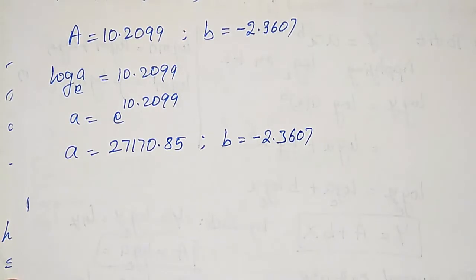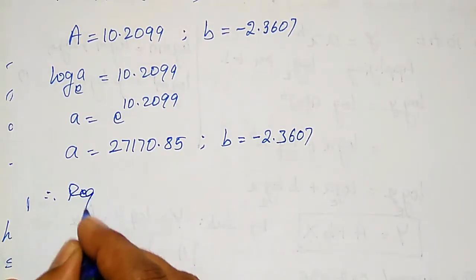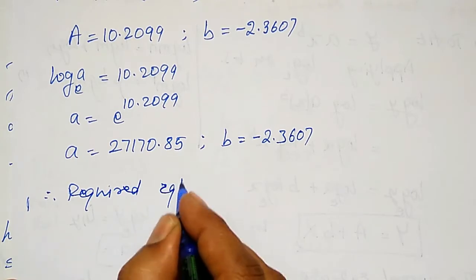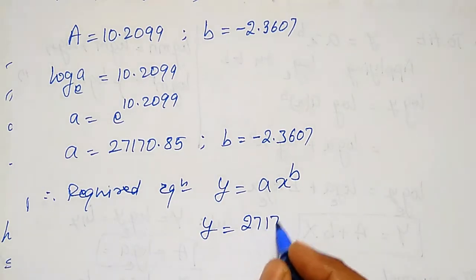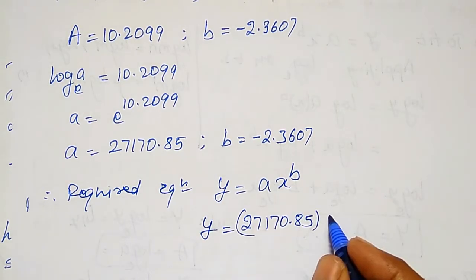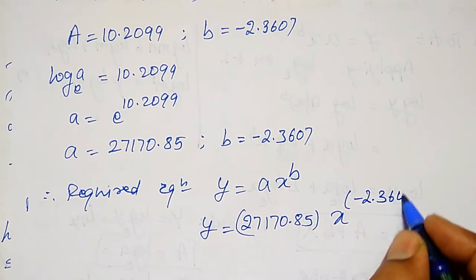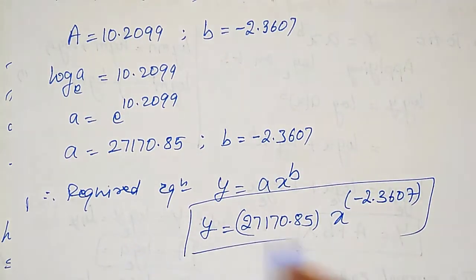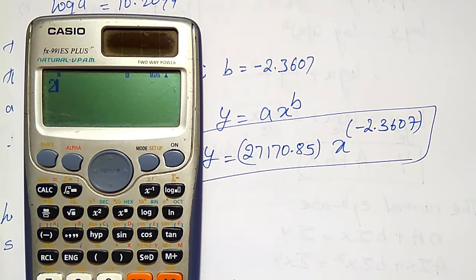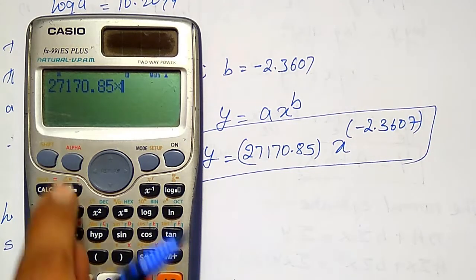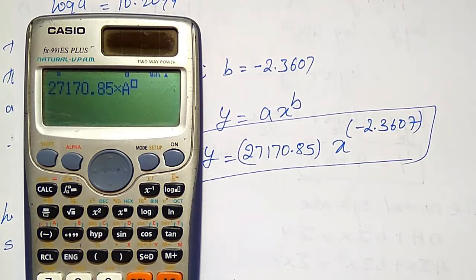Therefore the required power equation is: y = 27170.85 · x^(−2.3607). To verify, I use the calculator expression 27170.85 × α^(−2.3607) with calc option and substitute the original x values.